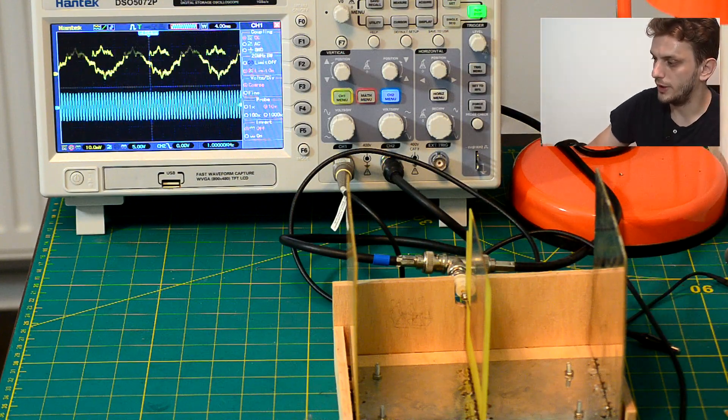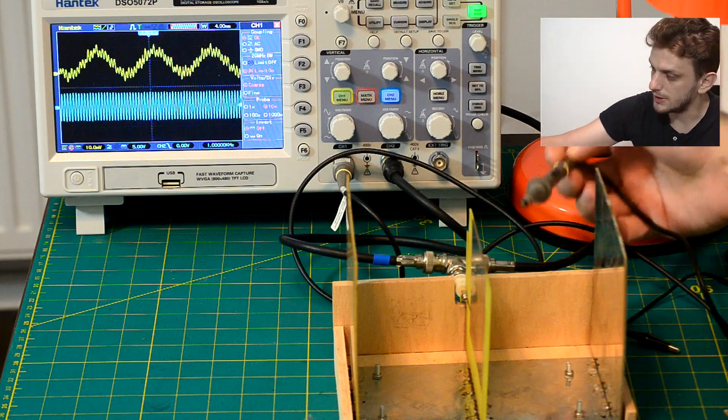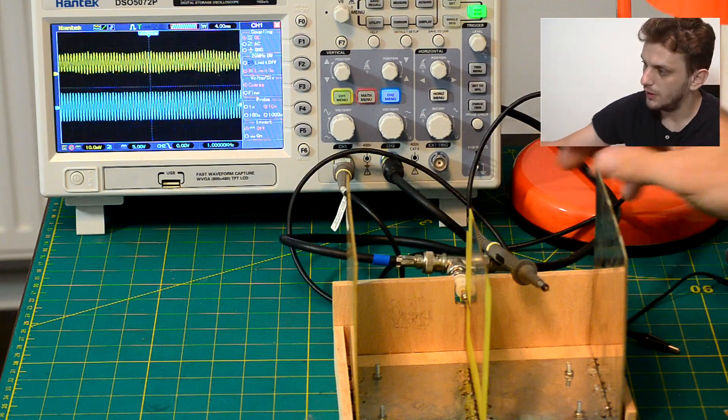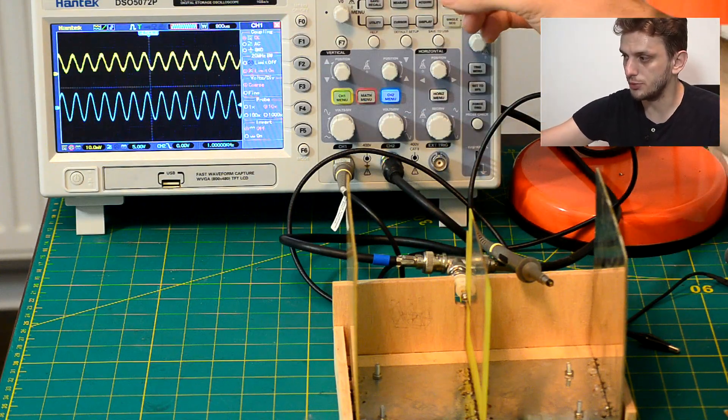So to try out the electrical field probe you can simply insert it inside of the electrical fields and you will be able to see on the oscilloscope that we do get a response.